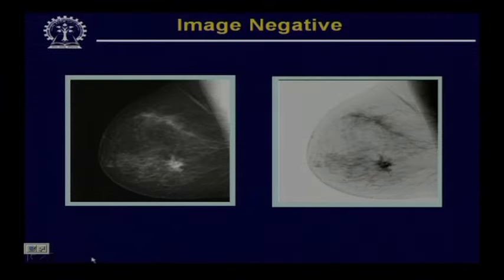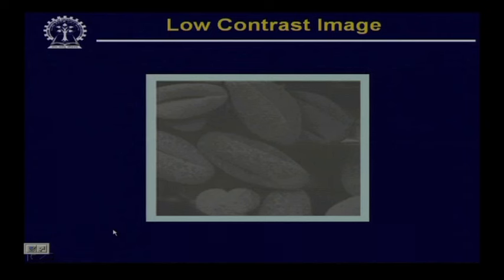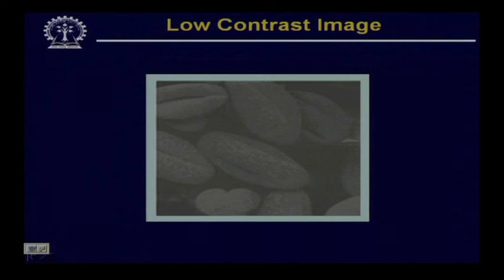For such dark images, the kind of processing technique that is very suitable is called the contrast stretching operation. Here we show an image which is a low contrast image — the contrast or intensity of the image is very poor and the overall appearance is very dark. The purpose of contrast stretching is to process such images so that the dynamic range of the image will be quite high, so that different details in the objects present in the image will be clearly visible.